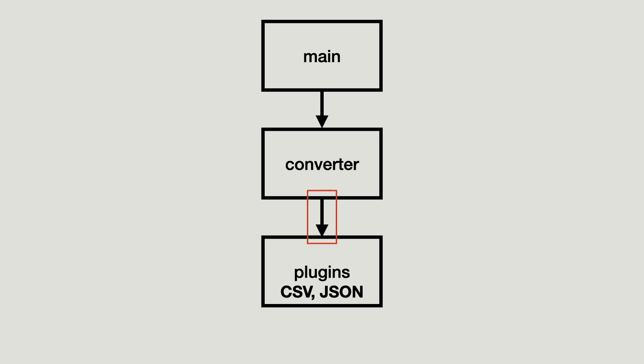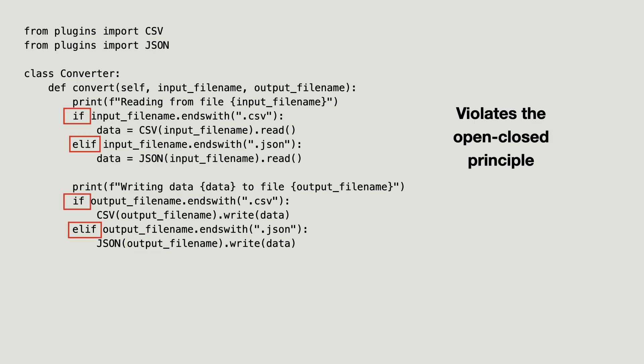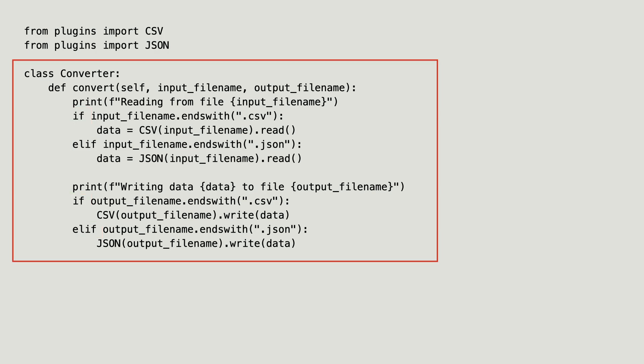But there is still one problem in the code. Look at this arrow — it points down to the plugins module. You can see this dependency in the code: the converter module imports CSV and JSON. This is known as a source code dependency. And why is this dependency needed? Because the converter class creates CSV and JSON class instances. And it even gets worse — the code needs a switch to create the proper instance. This violates the open/closed principle. The consequence is that any new file format will force this class to change as well.